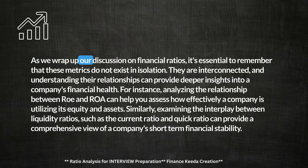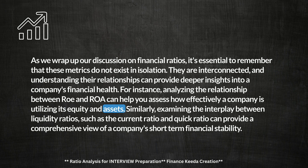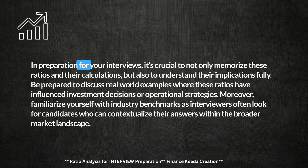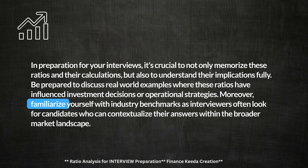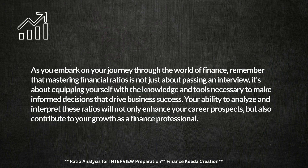As we wrap up our discussion on financial ratios, it's essential to remember that these metrics do not exist in isolation. They are interconnected, and understanding their relationships can provide deeper insights into a company's financial health. For instance, analysing the relationship between ROE and ROA can help you assess how effectively a company is utilising its equity and assets. Similarly, examining the interplay between liquidity ratios such as the Current Ratio and Quick Ratio can provide a comprehensive view of a company's short-term financial stability. In preparation for your interviews, it's crucial to not only memorise these ratios and their calculations, but also to understand their implications fully. Be prepared to discuss real-world examples, and familiarise yourself with industry benchmarks.